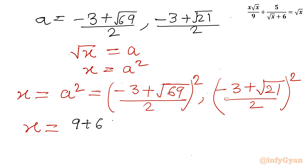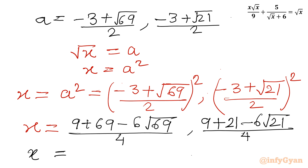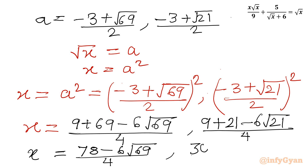Expanding the squares: first solution gives (9 plus 69 minus 6√69) over 4, which simplifies to (78 minus 6√69) over 4. Second solution gives (9 plus 21 minus 6√21) over 4, which is (30 minus 6√21) over 4. Dividing numerator and denominator by 2: x equals (39 minus 3√69) over 2 and x equals (15 minus 3√21) over 2.